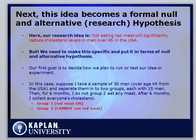Suppose I take a sample of 30 men over the age of 45 from the U.S.A. and separate them into two groups of 15 men each. Then, for a six-month period, group 1 is allowed to eat whatever red meat they want, but group 2 cannot eat any red meat. So I have two sample groups of men over 45 randomly collected, 15 men in each group.